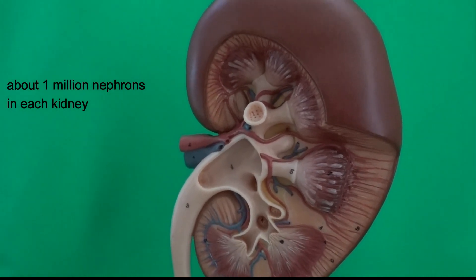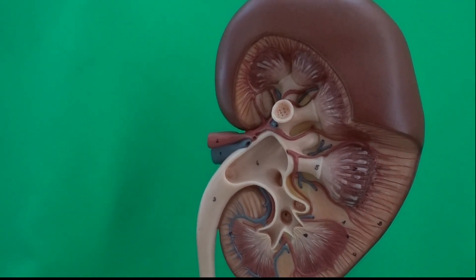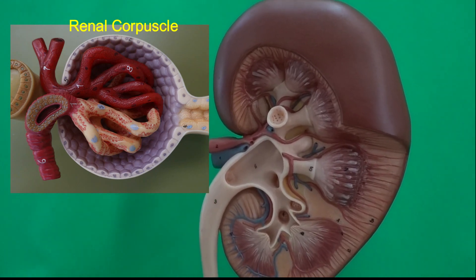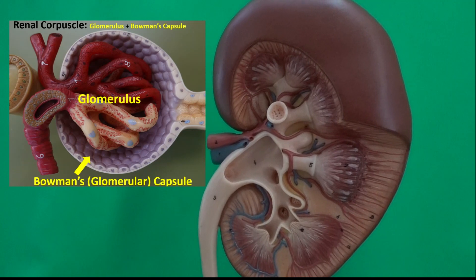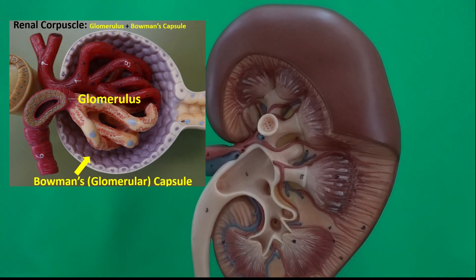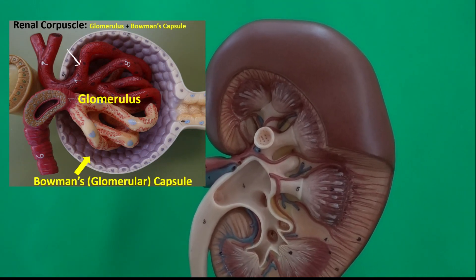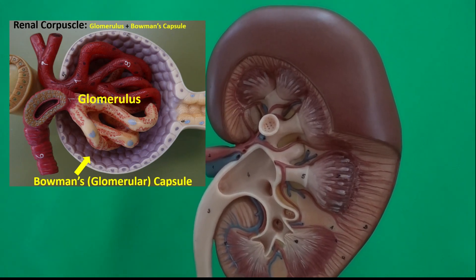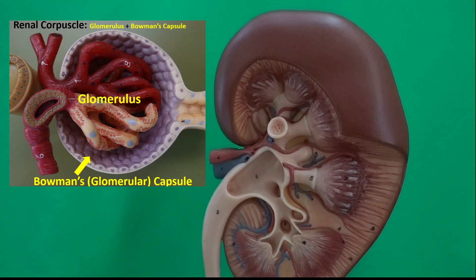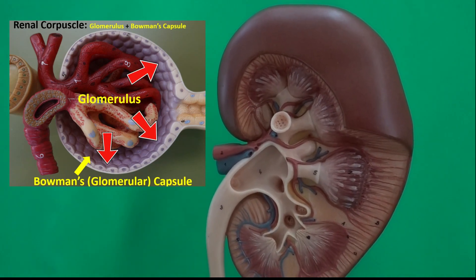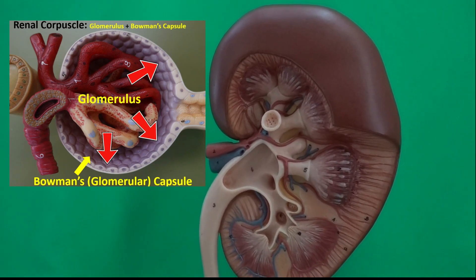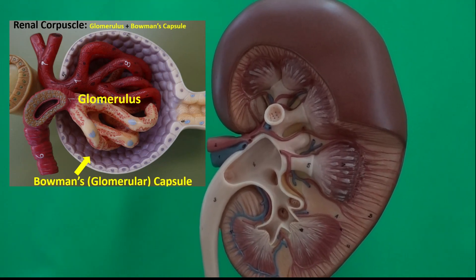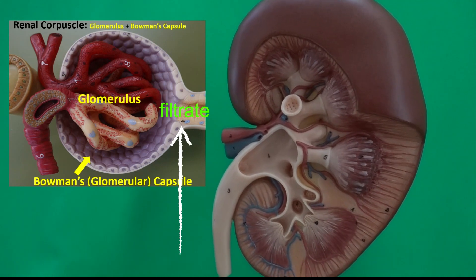At the beginning of the nephron is a structure called the renal corpuscle, where filtration of blood takes place. In the renal corpuscle, we have capillaries referred to as glomeruli. From those capillaries, water and solutes are pushed into the Bowman's capsule — this is the filtration of blood.